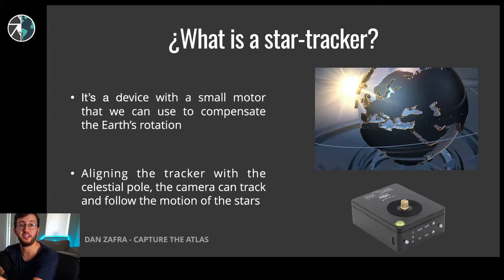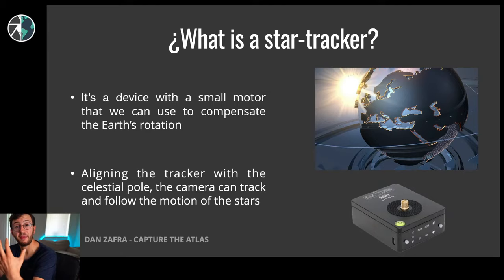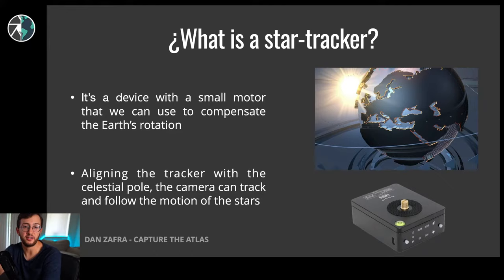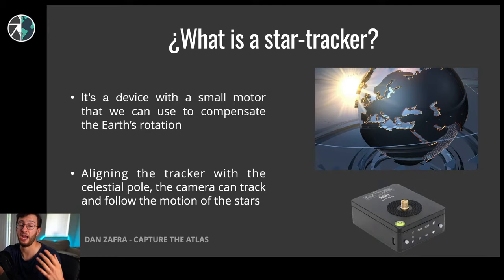First of all, let's see what is a star tracker. It's very simple - it's just a device with a small motor that we can use to compensate for the Earth's rotation. We live on a planet spinning at very high speed in space, which means when shooting the Milky Way for more than 25-30 seconds, the stars look like trails. Using the tracker and aligning this device with the celestial pole - either north or south depending on your hemisphere - you will be able to move your camera at the same speed as the motion of the stars. That's basically a tracker.